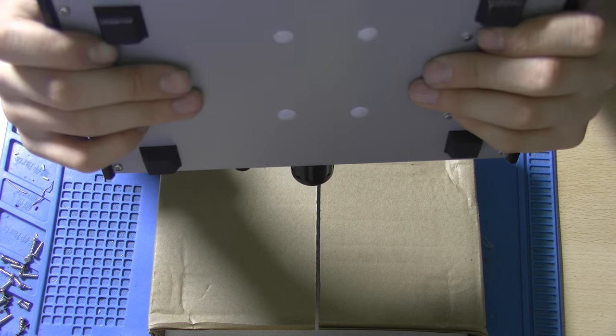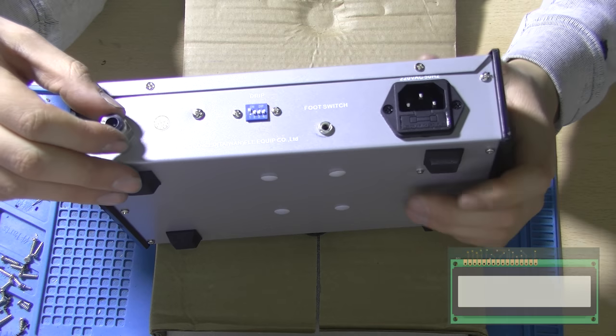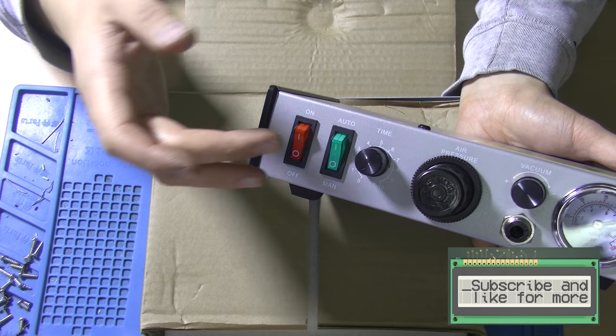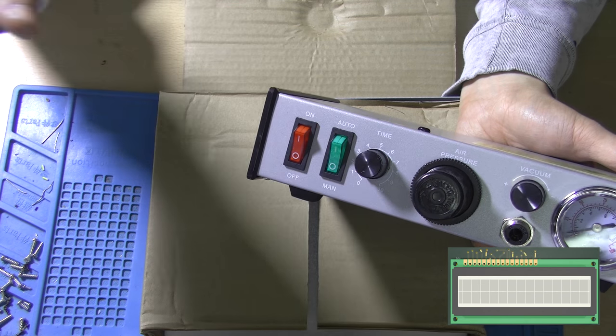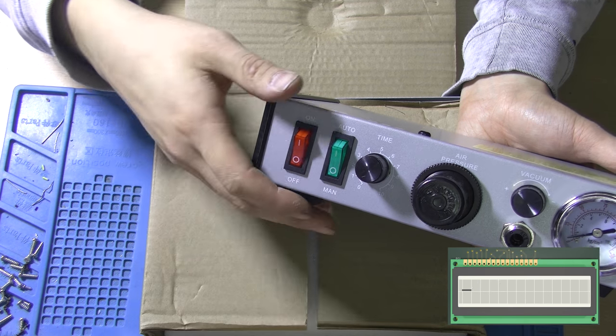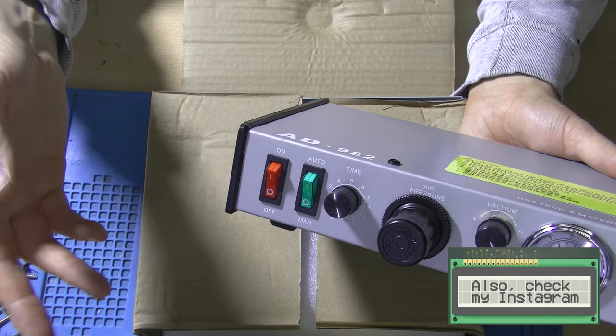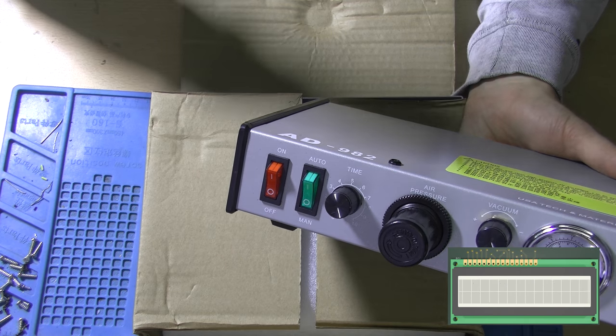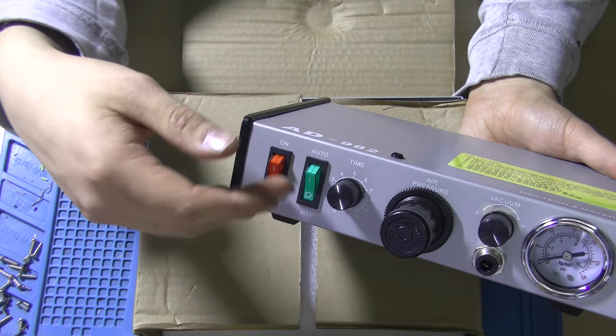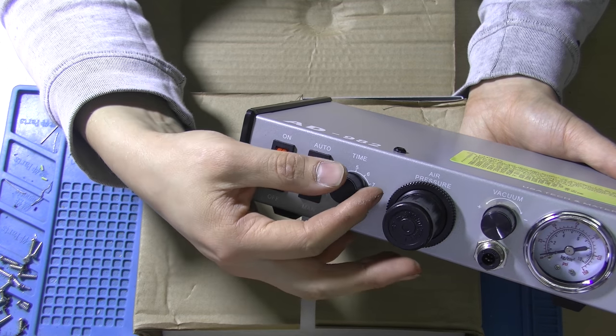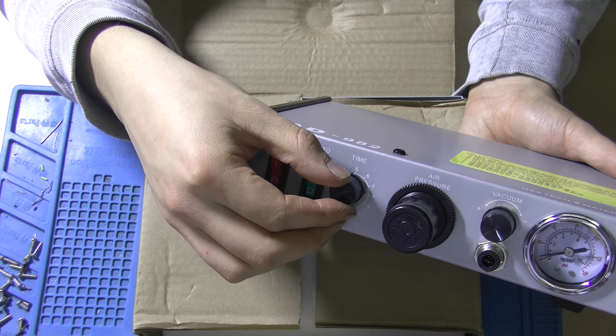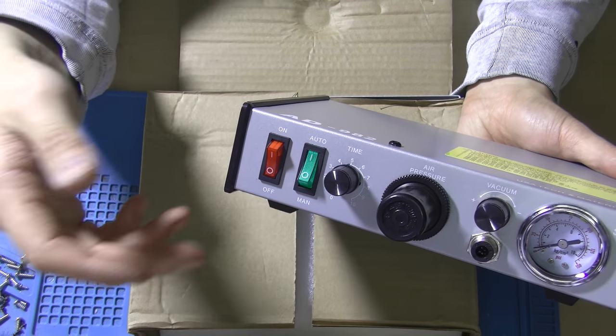It runs on 220 volts AC, 50 Hertz, and it has a fuse and various inputs on the front. So you've got the on-off switch, the auto mode, manual mode. I think the manual mode allows you to keep the pedal pressed down, and as long as you've got the pedal pressed down it will actually dispense solder paste. The time knob, as I've said before, is the duration, the length of the dispense when this is set to auto mode.